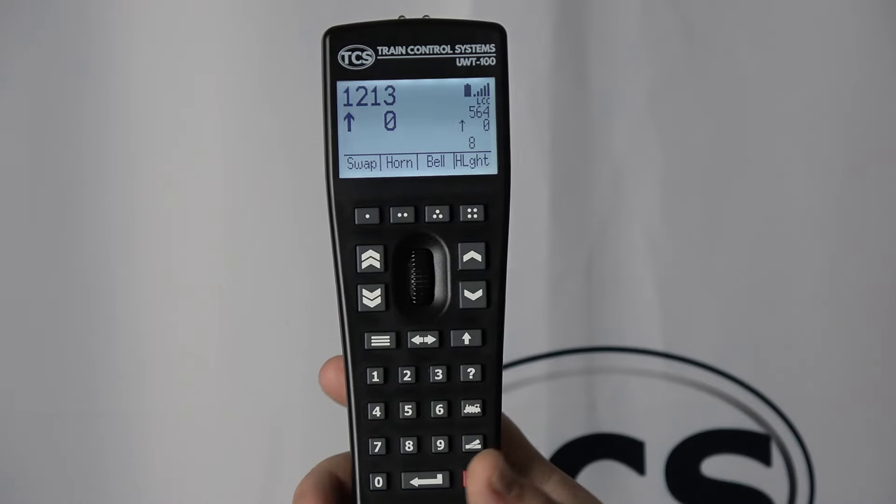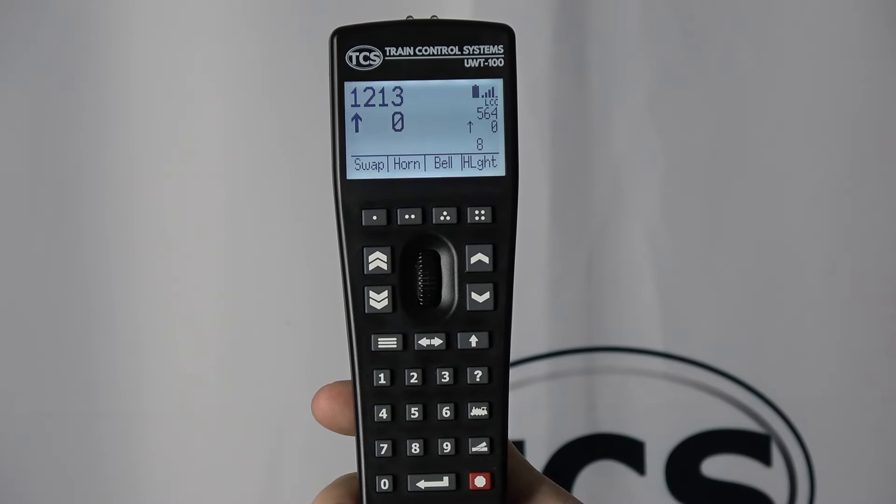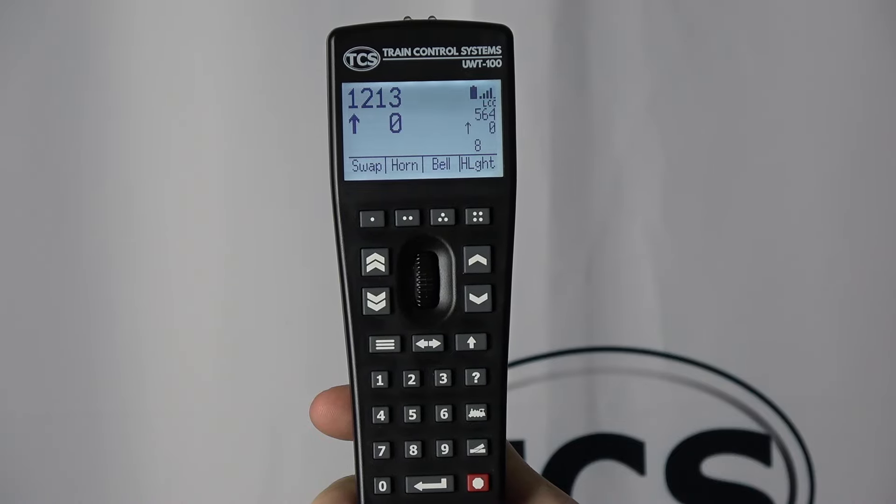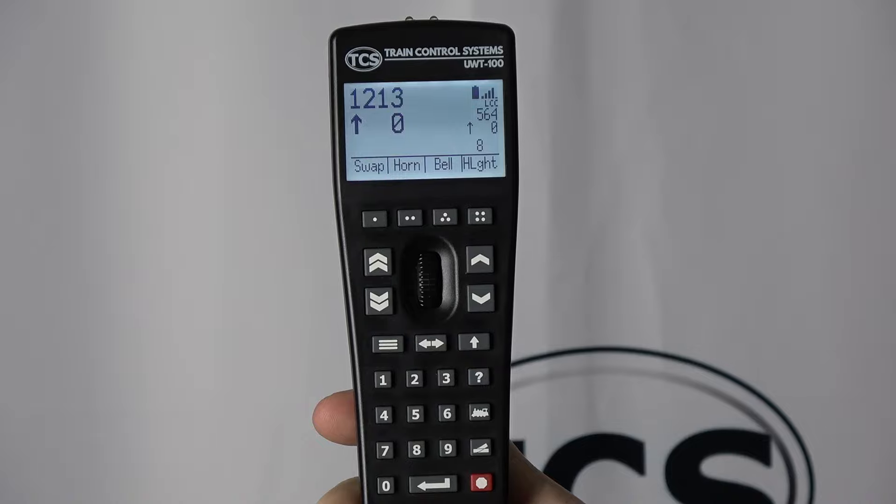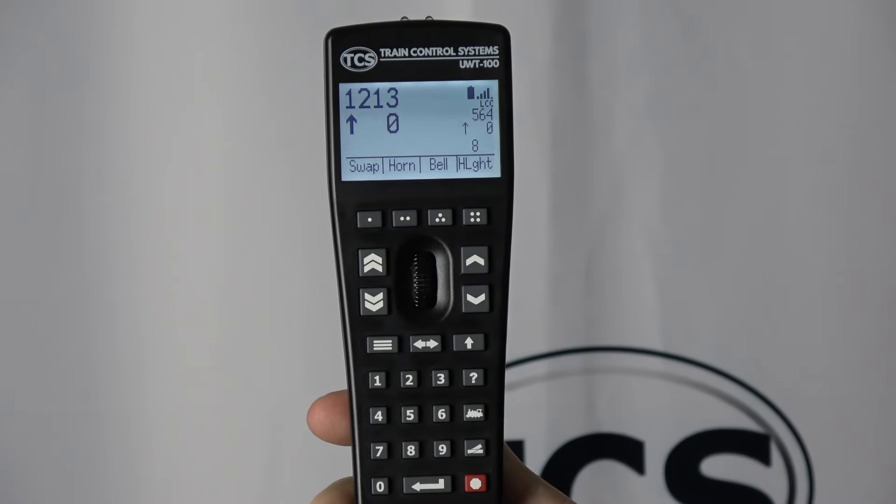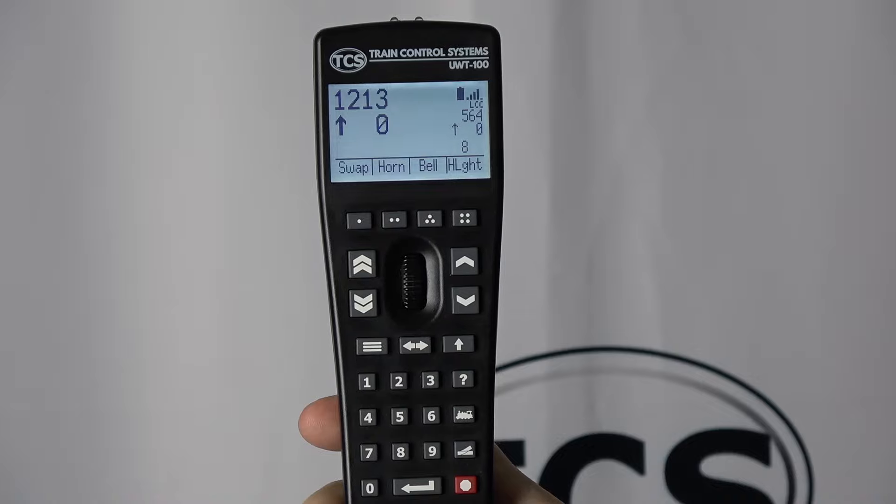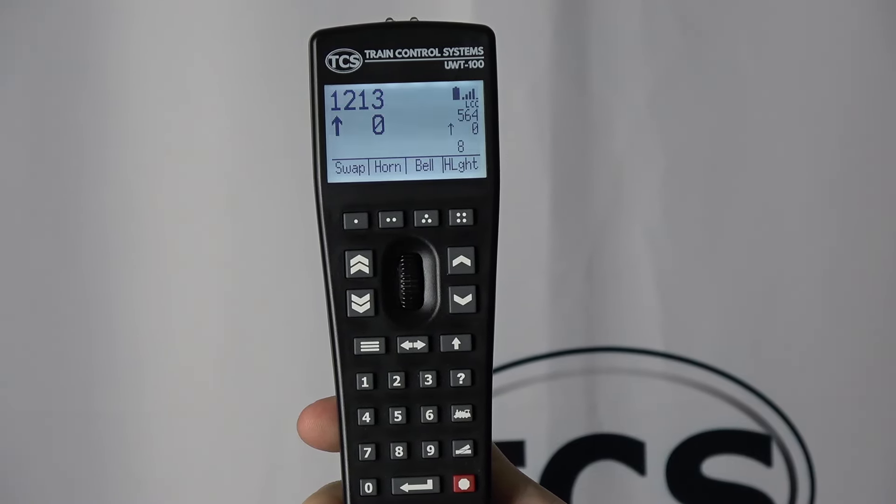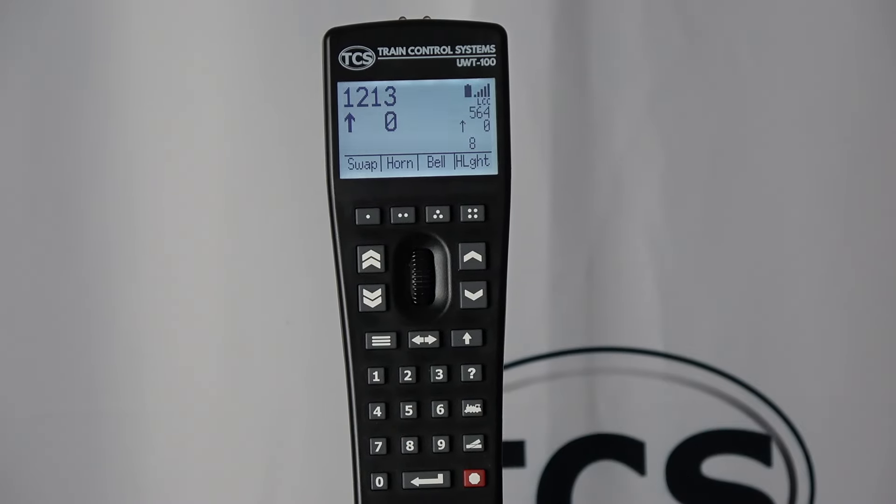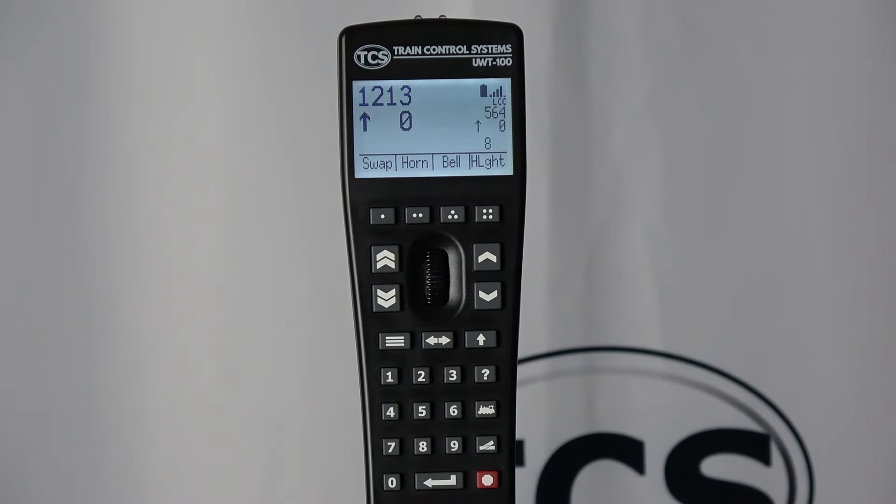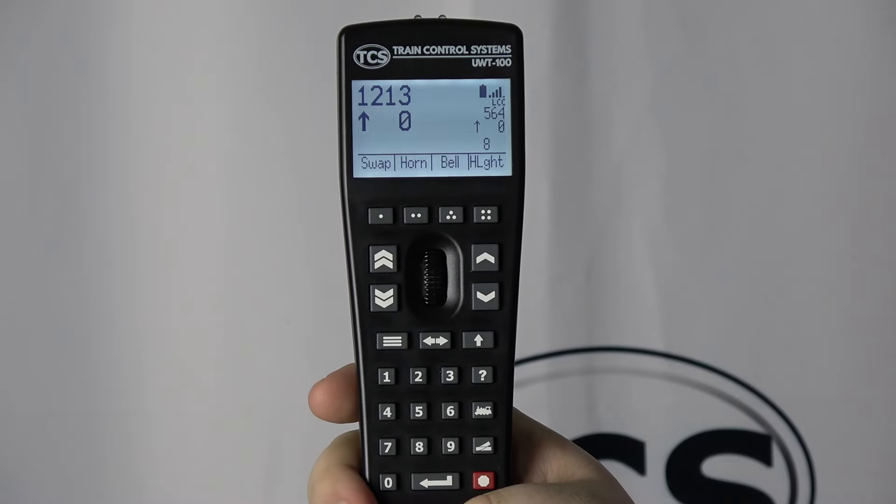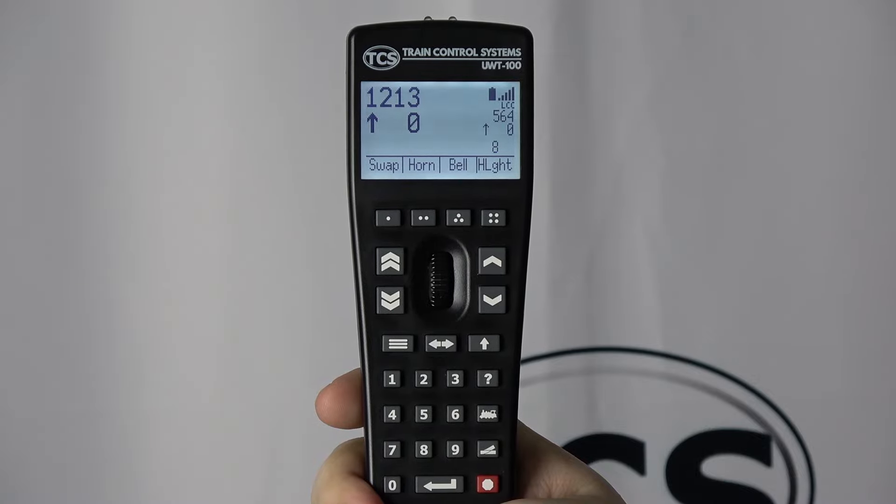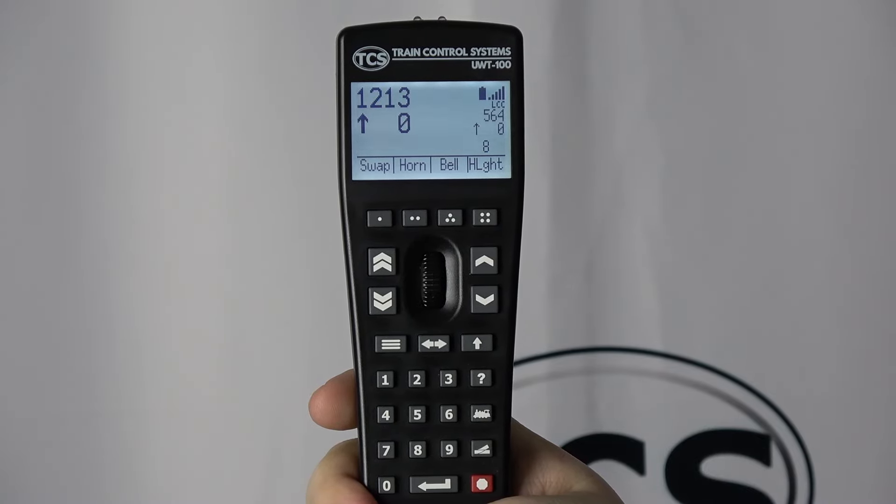In dual throttle mode, function buttons and the thumb wheel will only control the train in the primary slot. The direction button only works for the primary train and will not work for secondary. However, we will show you how to change the direction of the secondary train in just a little bit. Yard mode still works for both trains. If you have changed the double chevron keys to control functions, these functions still work in dual throttle mode for the primary train as long as yard mode is not active.